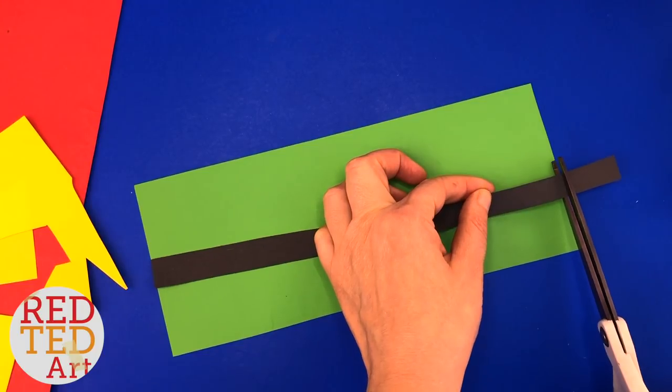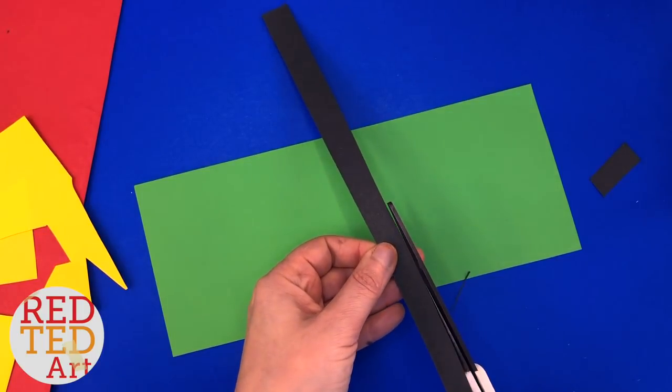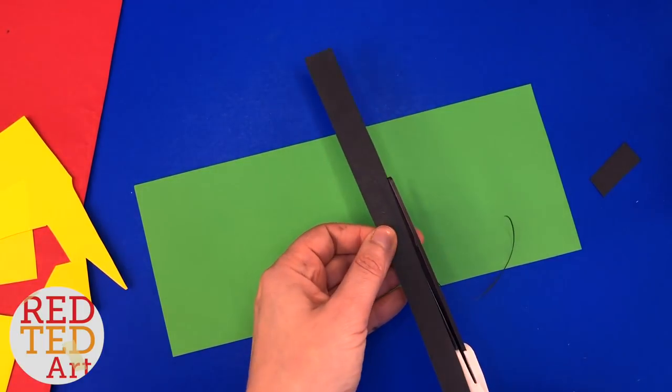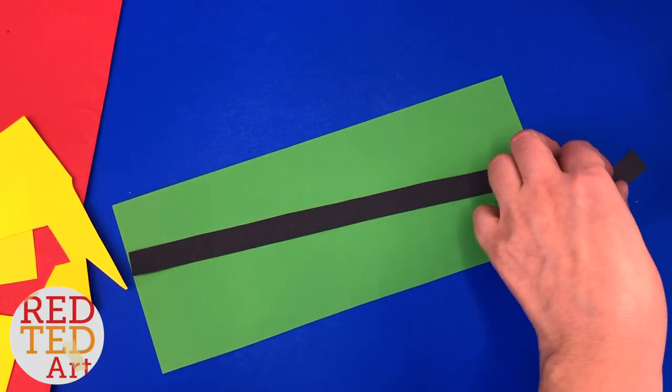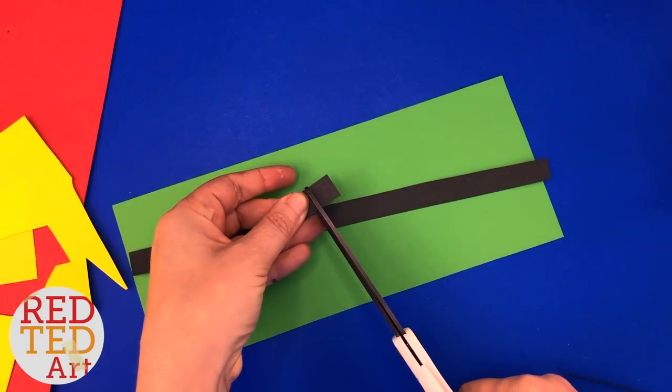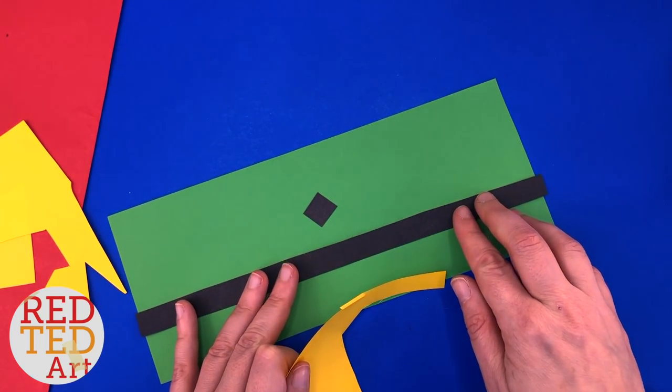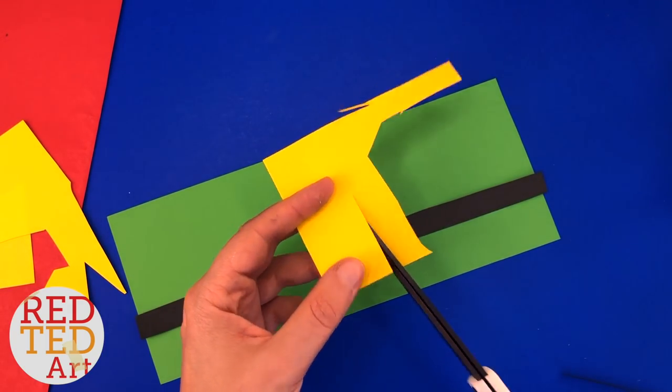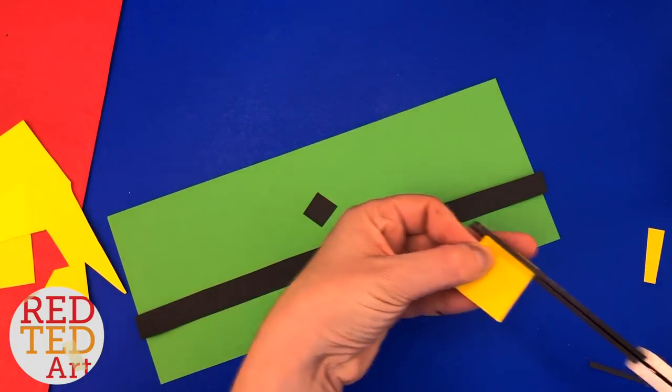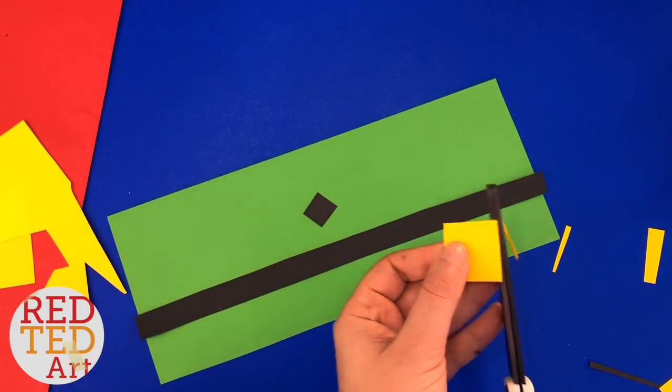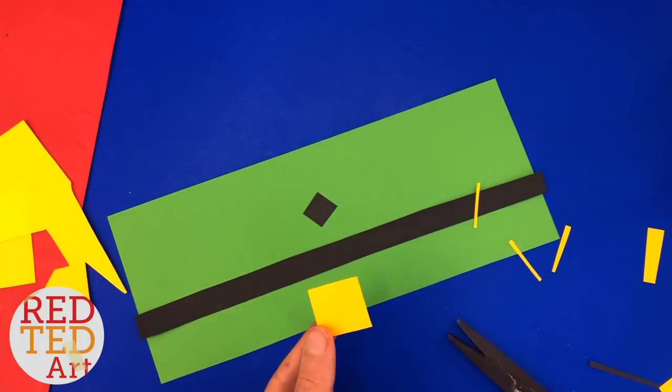Cut the end bit off. Maybe cut it a bit straighter. And then also cut a little square, the same size. We need a yellow square. And let's just start lining it up so we can see what it looks like. Again, use a ruler if you need to. I like to cut things freehand. Let's have a look.